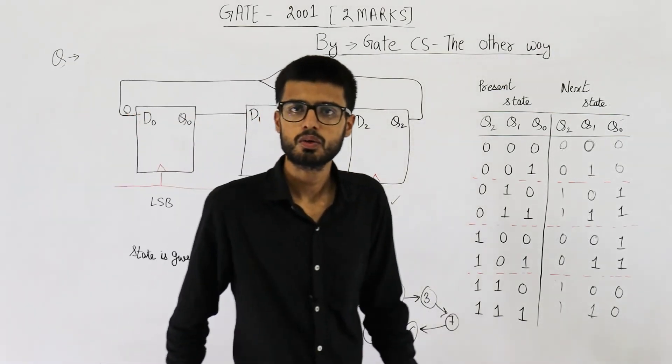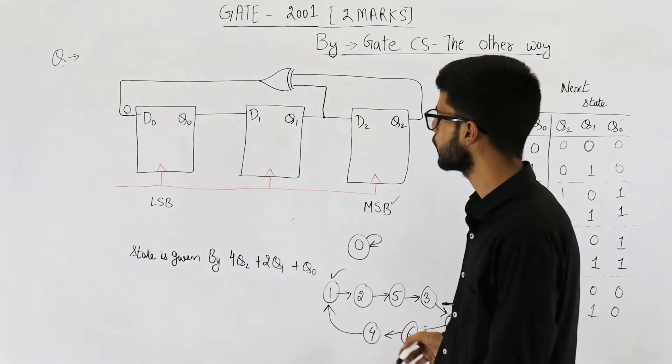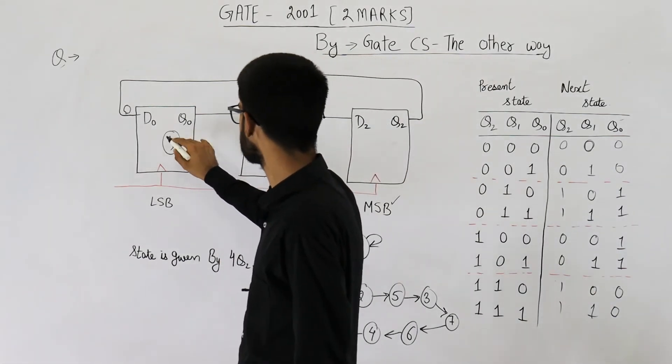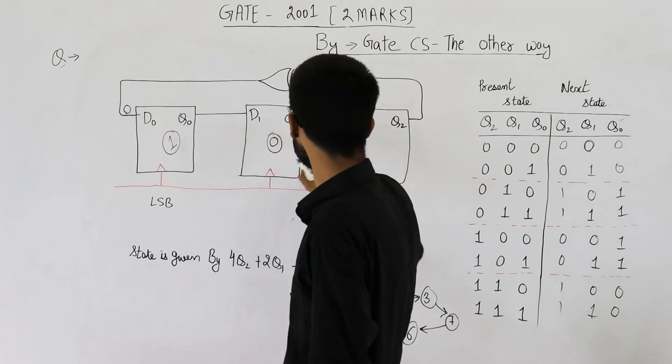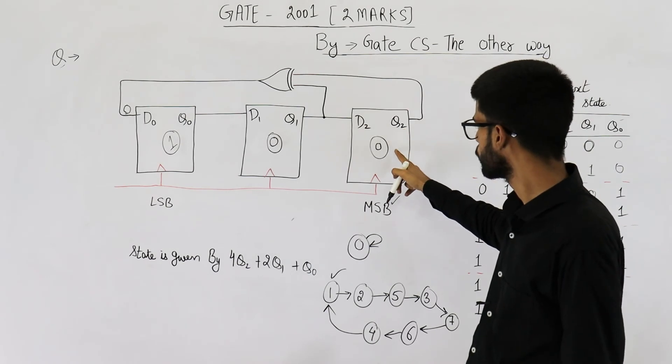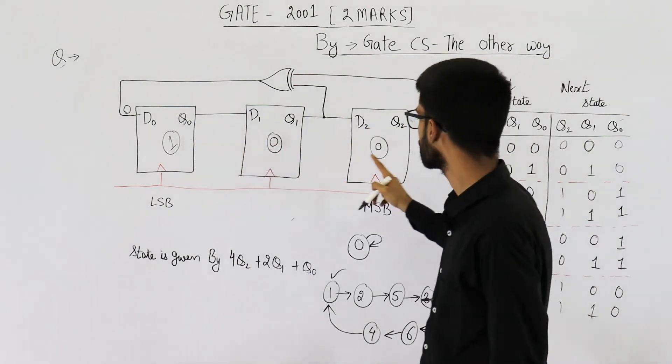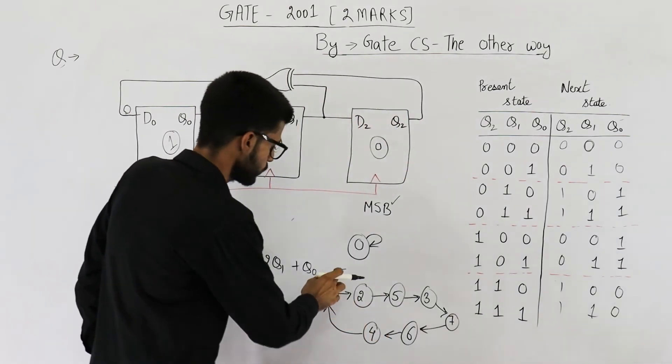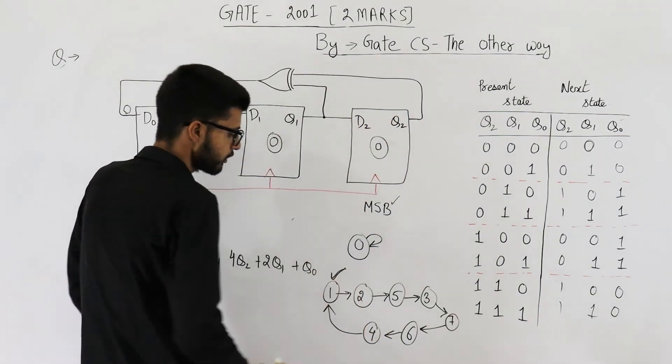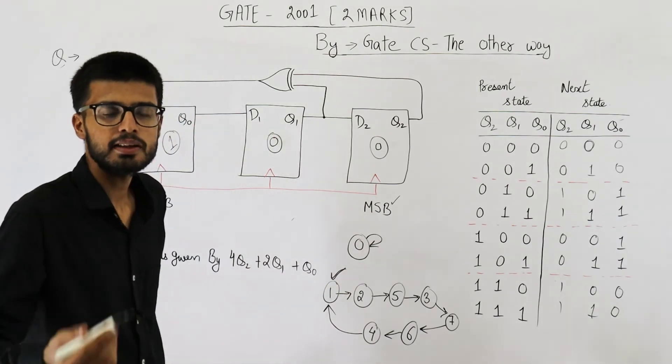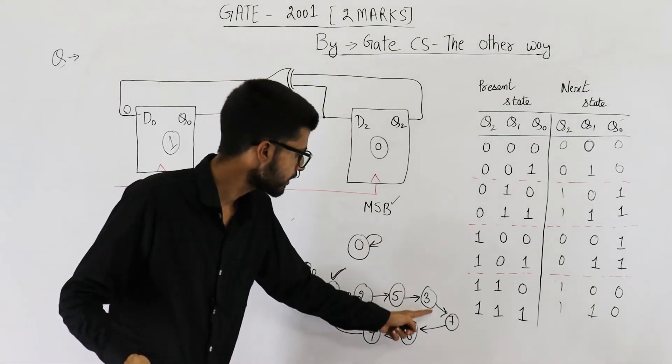Yeah, so I just forgot to mention one thing. They have said the initial state is value of q0 is 1, this one is 0 and this one is also 0. So the initial state is q2, q1, q0, which is 0, 0, 1. That means the initial state is 1. So we are here. Actually, we begin from here. And you keep on giving as many clocks as you want, you will never exit this loop.